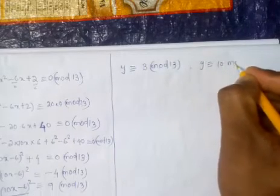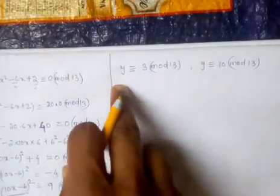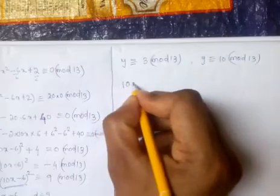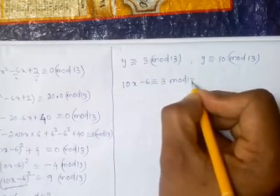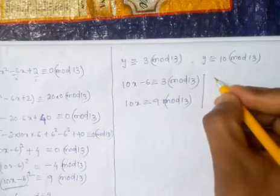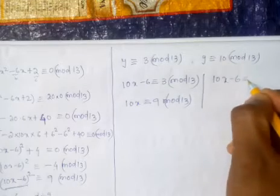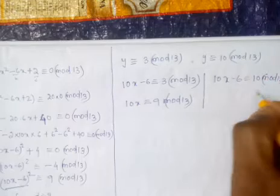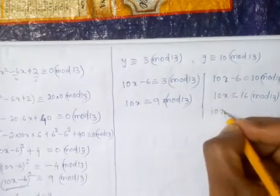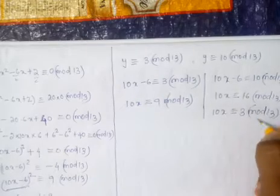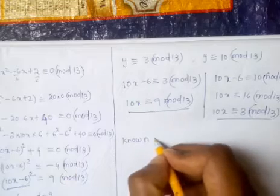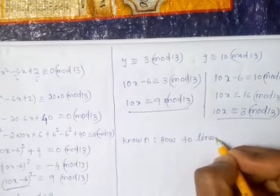We have two solutions: y ≡ 3 mod 13 and y ≡ 10 mod 13. Now substituting back y = 10x - 6 to find x: for the first case, 10x - 6 ≡ 3 mod 13, giving 10x ≡ 9 mod 13. For the second case, 10x - 6 ≡ 10 mod 13, giving 10x ≡ 16 ≡ 3 mod 13. Both can be solved using standard linear congruence methods.